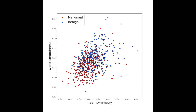Let's take a closer look at two of the features in this dataset. On the x-axis, we have mean symmetry, and on the y-axis, we have worse smoothness. Malignant test results are given in red, and benign results are given in blue.